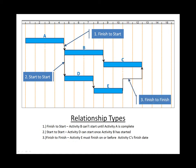Then there's the finish to finish. The finish to finish relationship in the schedule here shows that activity E must finish on or before the finish date for activity C.